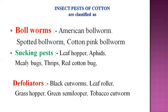Cotton pests are classified into three categories. The first category is the severe pests — three types of bollworms: American bollworm, spotted bollworm, and cotton pink bollworm. The second category is sucking pests such as leafhopper (jassid), mealybugs, thrips, red cotton bug, and dusky cotton bug. The third category is defoliators such as black cutworm, leaf roller, semilooper, tobacco caterpillar, and leaf folder.